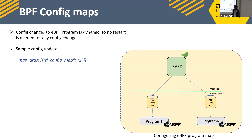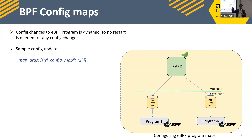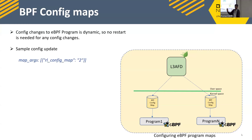Config maps allow dynamic runtime configuration. For example, in rate limiting you can set connection limits, and you can dynamically add monitored ports — say you're monitoring ports 80 and 443 and want to add another port. You call the update API and it updates the BPF config maps. The next incoming packet will validate against the new rule immediately, with no restart needed. This leverages BPF maps for communication between user-space and kernel programs.